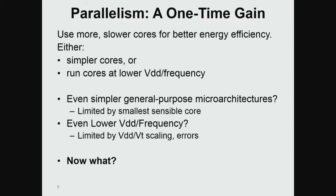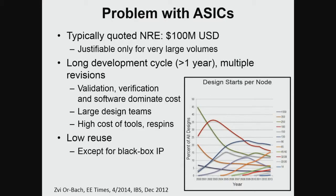So now what? What do we do? We have ASICs as the ultimate way to get efficiency, but the ASICs have been dying. The business of building ASICs is going away because the typically quoted non-recurring engineering costs are on the order of a hundred million dollars. There are very few application-specific things that can amortize a hundred million dollar cost.